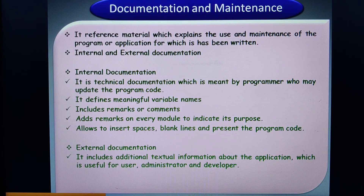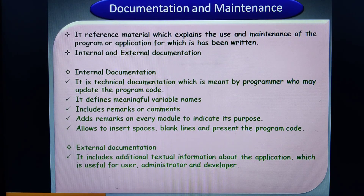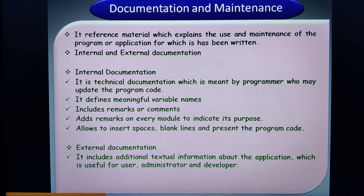The developer's manual contains all low-level flowcharts, data dictionaries — a huge collection of data in that particular application — decision tables, files, and complete system charts. This helps the developer update the application or program. Such information useful for updating the application is referred to as the developer's manual.